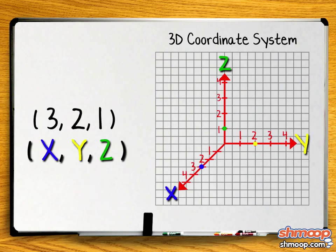We first plot the x, y, and z points — three on the x, two on the y, and one unit on the z. Then we draw dotted lines parallel to the axes and connect the x and y points, then draw additional dotted lines parallel to connect all the points drawn.